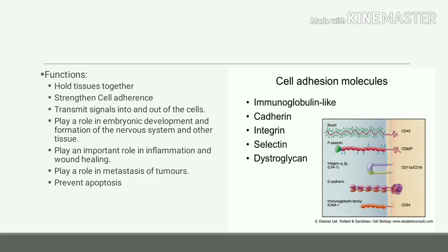They also play an important role in inflammation and wound healing, in the metastasis of tumors, and they prevent apoptosis. If there is a defect in the cell adhesion molecule, cellular contact from the extracellular matrix is lost, which fastens the process of apoptosis. This is all about intercellular junctions. Thank you.